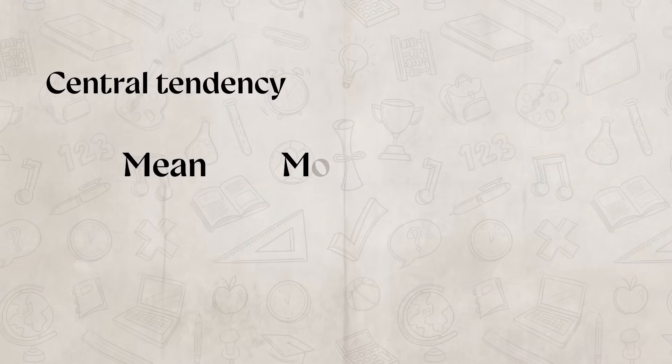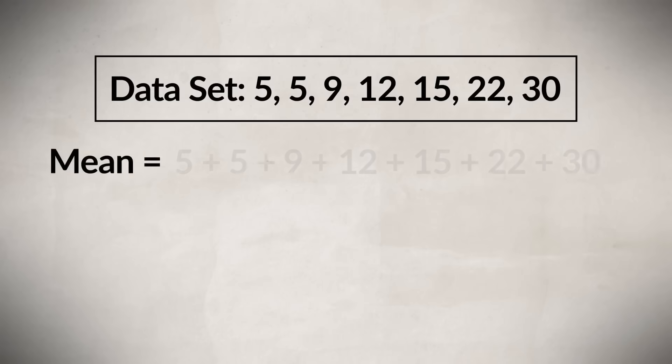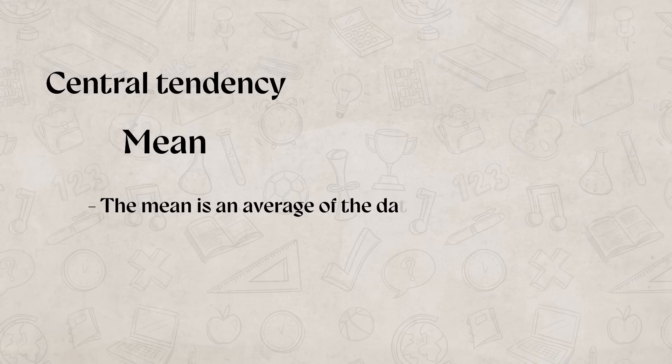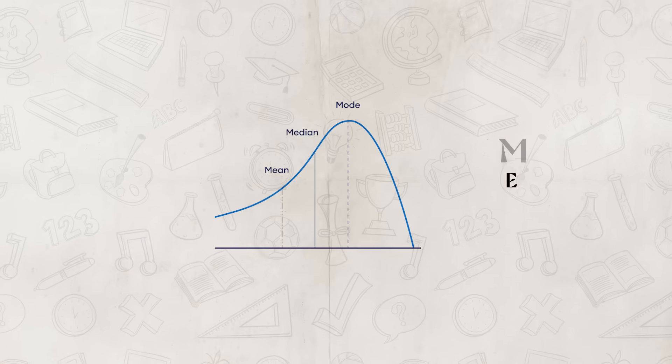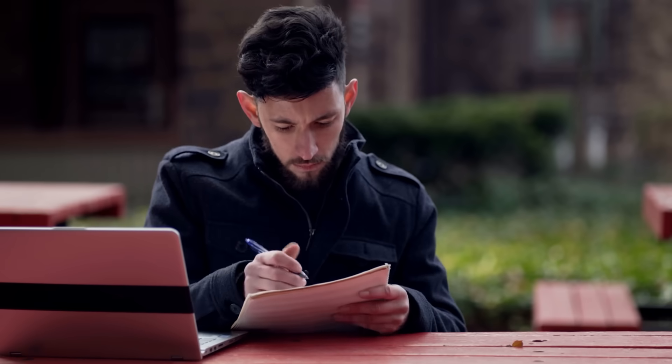All right, up first, let's start with the central tendency, which is the mean, mode, and median. The mean is the average of the data set. To find this, you would take the sum of all of your values and then divide by the amount of values you added together. This is what tells you where the center of the data lies. One thing you need to remember is that the mean is easily affected by outliers.